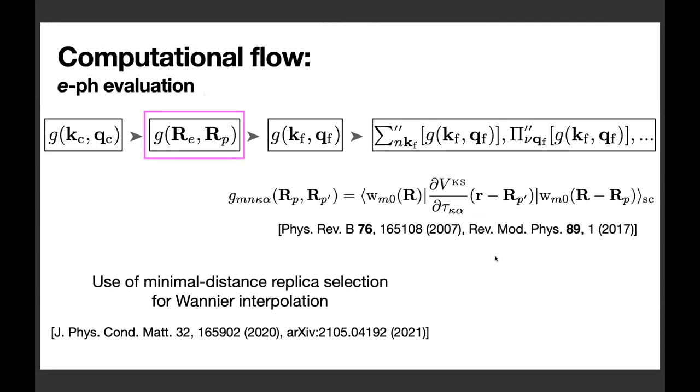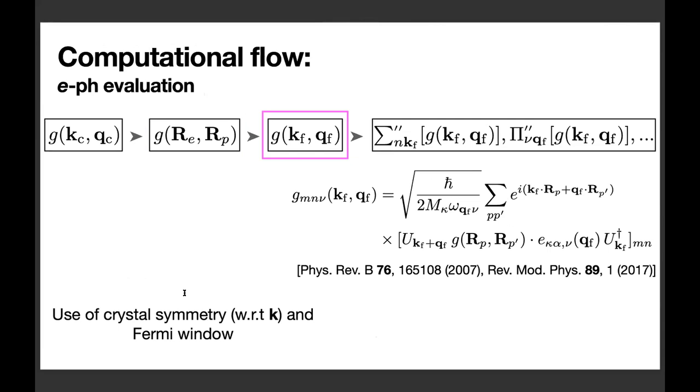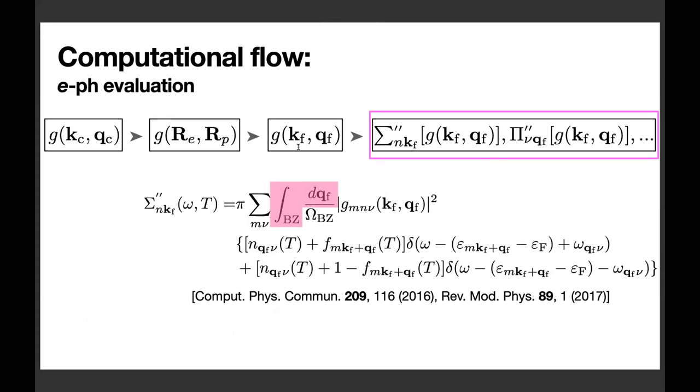After evaluation of electron phonon vertex on coarse grid, EPW performs the transformation from the coarse Bloch basis to Wannier90. Here EPW can use a minimal distance replica selection method recently implemented in Wannier90 for better interpolation quality. Then EPW performs Wannier interpolation of electron phonon vertex on dense grid. Here we can reduce the computational size by using crystal symmetry and Fermi window. Finally, we obtain electron phonon vertex on dense grid, with which we can compute several physical properties.